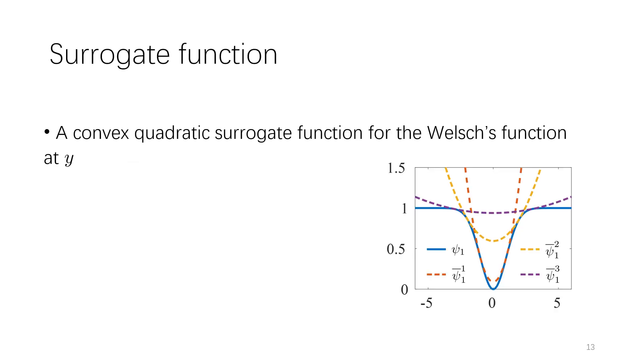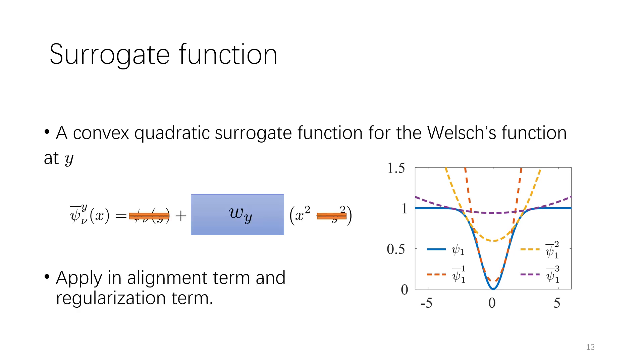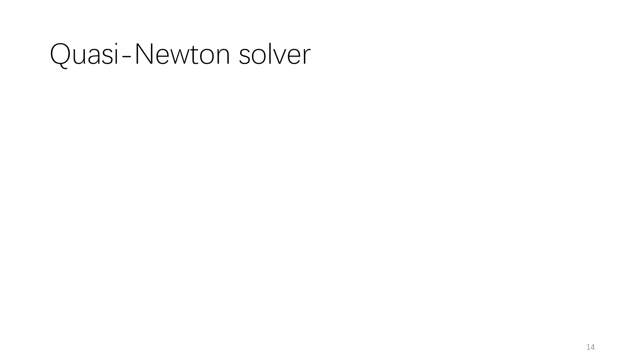Notice that Welsch's function has a convex quadratic surrogate function, so we apply it to the alignment term and the regularization term to construct two quadratic terms.